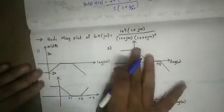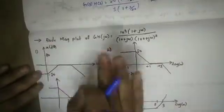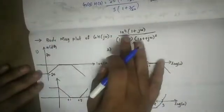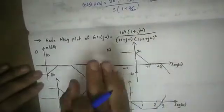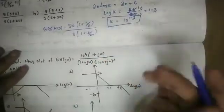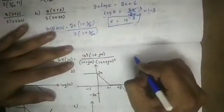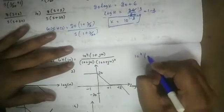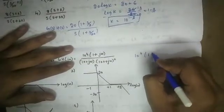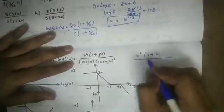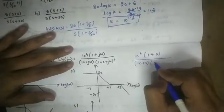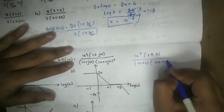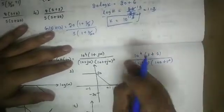For the next question, we have the Bode magnitude plot of G(s)·H(s), and the transfer function is given as 10 to the power 4 times (1 + s) divided by (10 + s) times (100 + s) squared. We need to identify the corner frequencies and sketch the magnitude plot.